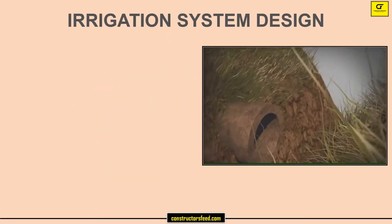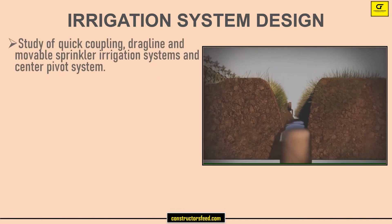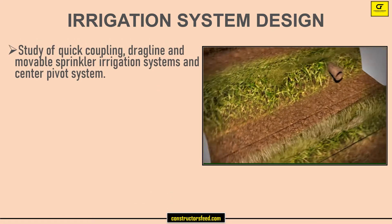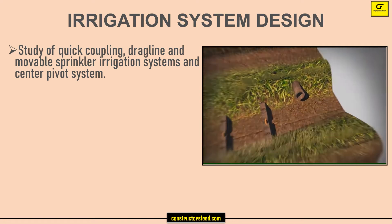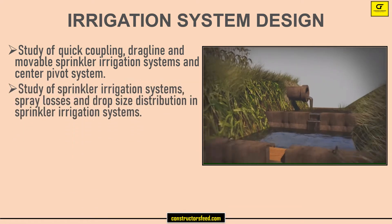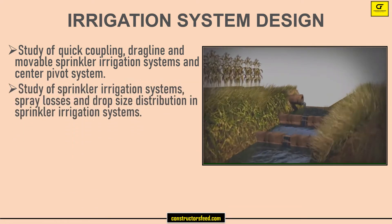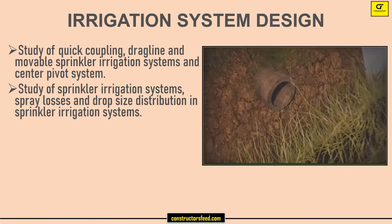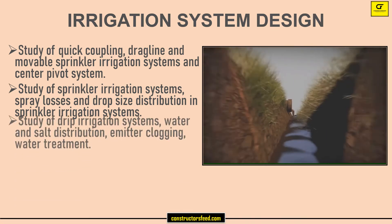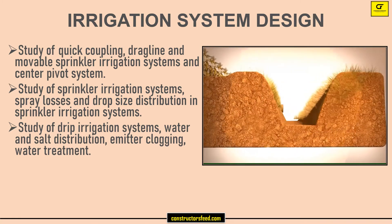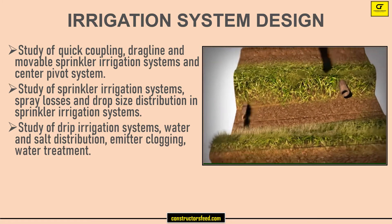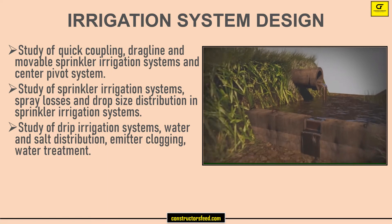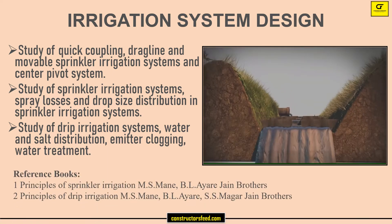Irrigation System Design: study of quick coupling, dragline, and movable sprinkler irrigation systems, and center pivot systems; study of spray losses and drop size distribution in sprinkler irrigation systems; and study of drip irrigation systems — water and salt distribution, emitter clogging, and water treatment.